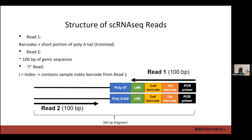You may also get an I-read if you use CellRanger to generate your FASTQ files from the sequencing machine output. The I-read contains the sample index but isn't really important — you can do everything you need with just read 1 and read 2.